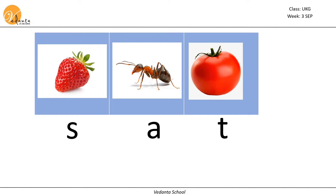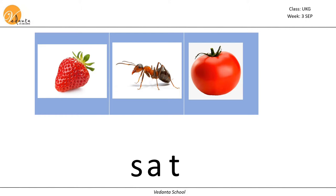So the first one: s, a, sa, t — sat. Sat. S, at — sat. The sounds s, a, and t blend together to make the word 'sat'.